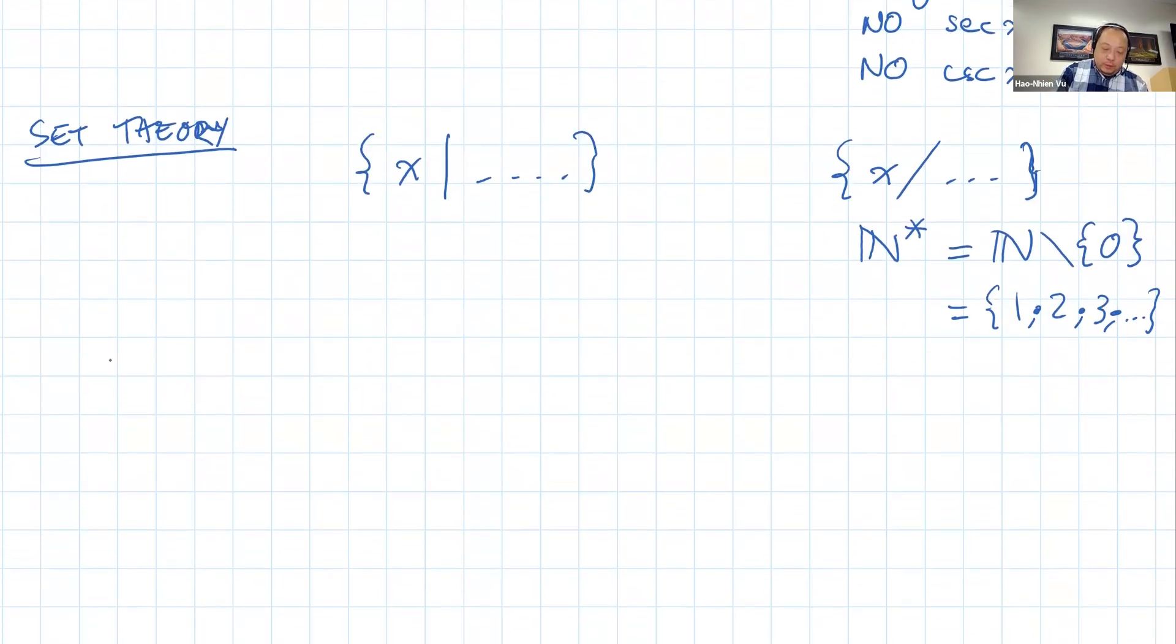And interval notation. Exactly the same except again for the comma and the semicolon. So the interval from 0 to 3, the half-closed half-open interval, is in Vietnam written [0; 3) with a semicolon.